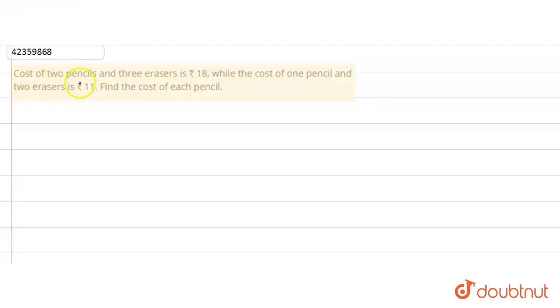Hello students, the question is: cost of 2 pencils and 3 erasers is Rs 18, while the cost of 1 pencil and 2 erasers is Rs 11. Find the cost price of each pencil.